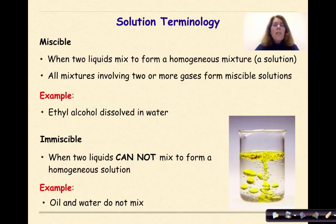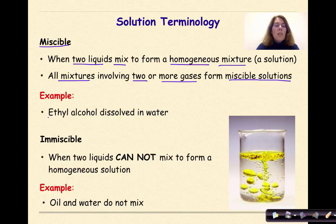What does it mean when something is miscible? When two liquids mix to form a homogeneous mixture in a solution, this is miscible. All mixtures involving two or more gases form miscible solutions. An example is ethyl alcohol dissolved in water.